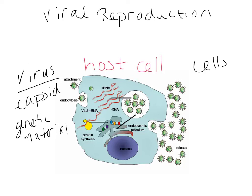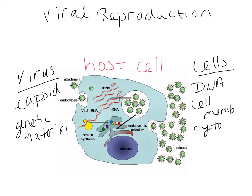Your cells, no matter what kind - prokaryotic or eukaryotic - have to have some DNA, a cell membrane, cytoplasm, and ribosomes. If it's a eukaryotic cell - plant, animal, or fungus - it's going to have all those membrane-bound organelles.